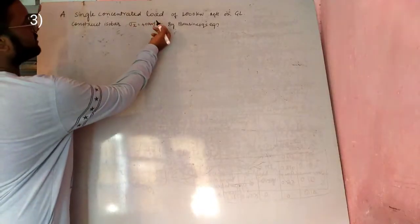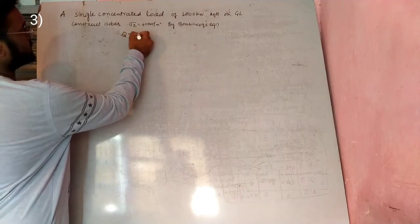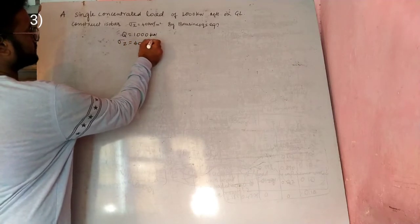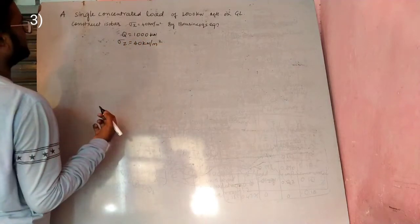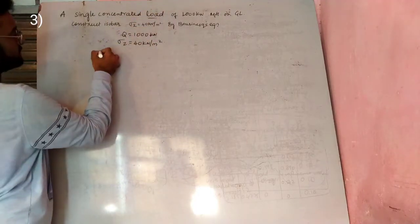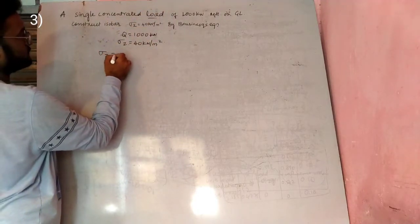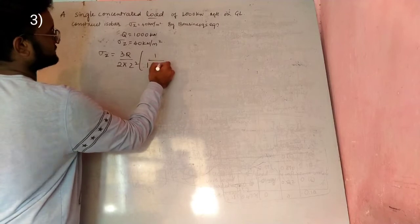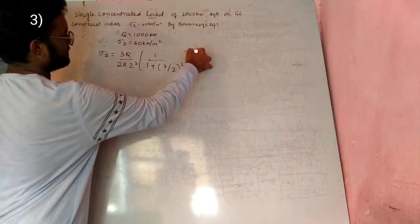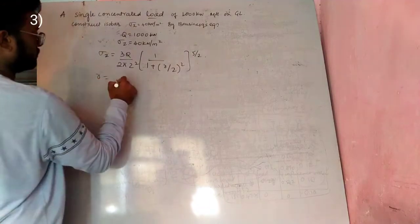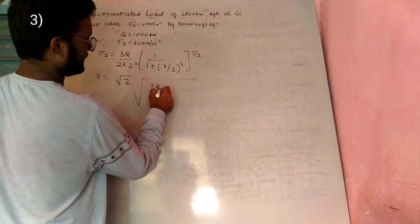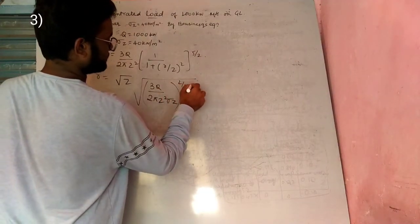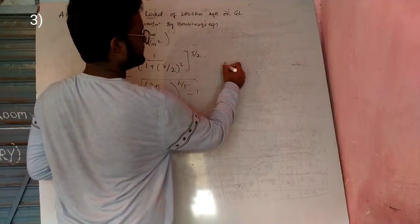Next problem: a single concentrated point load q equal to 1000 kN, with σz given as 40 kN/m². Using the point load formula σz equal to 3q divided by 2πz² × (1 plus (r/z)²)^(−5/2), we rearrange to find r. First calculate the ratio: σz/q equals 40/1000 equals 0.04.